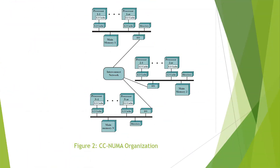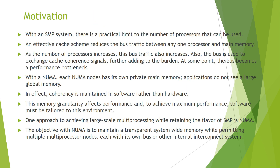This figure shows the CC-NUMA organization. The difference between SMP and NUMA is SMP uses a single shared bus connecting processors to main memory and I/O modules, while NUMA uses multiple shared buses connecting processors to I/O modules and main memory. The motivation to use NUMA is that with an SMP system, there is a practical limit to the number of processors that can be used. An effective cache scheme reduces bus traffic between any one processor and main memory, but as the number of processors increases, this bus traffic also increases. The bus is also used to exchange cache coherence signals, further adding to the burden, and at some point the bus becomes a performance bottleneck.